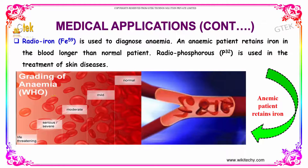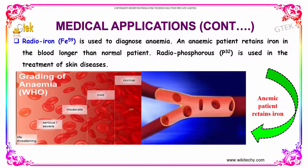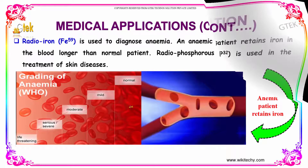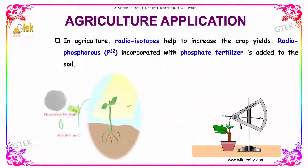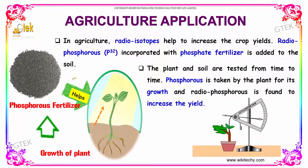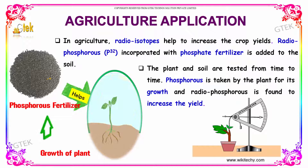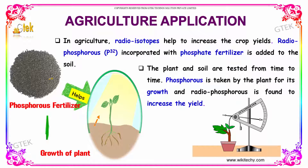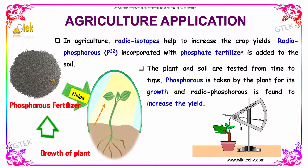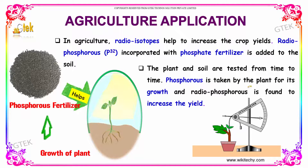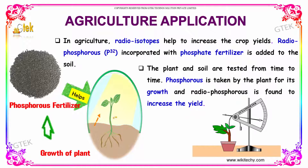Radio phosphorus is used in the treatment of skin cancers and skin diseases. This is the grading of anemia. In agriculture, radioisotopes help to increase crop yields. Radio phosphorus incorporated with a phosphate fertilizer is added to the soil, and the plant and soil are tested from time to time, as phosphorus is taken by the plant for its growth.